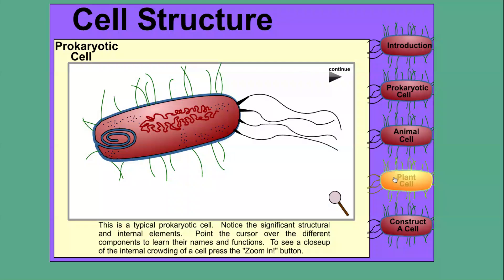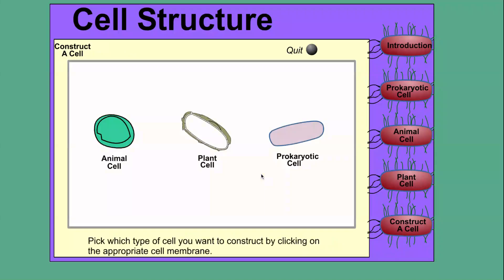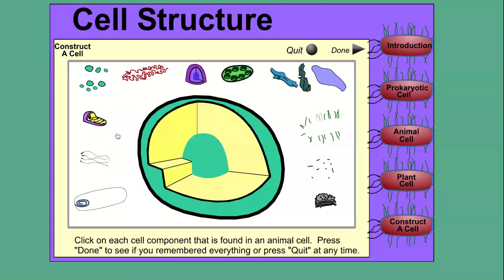Do the same with animal and plant cell. And the last one is construct a cell. They will give you three kinds of cells and you pick one type of cell you want to build. For example, here's an animal cell and they have a lot of organelles here.